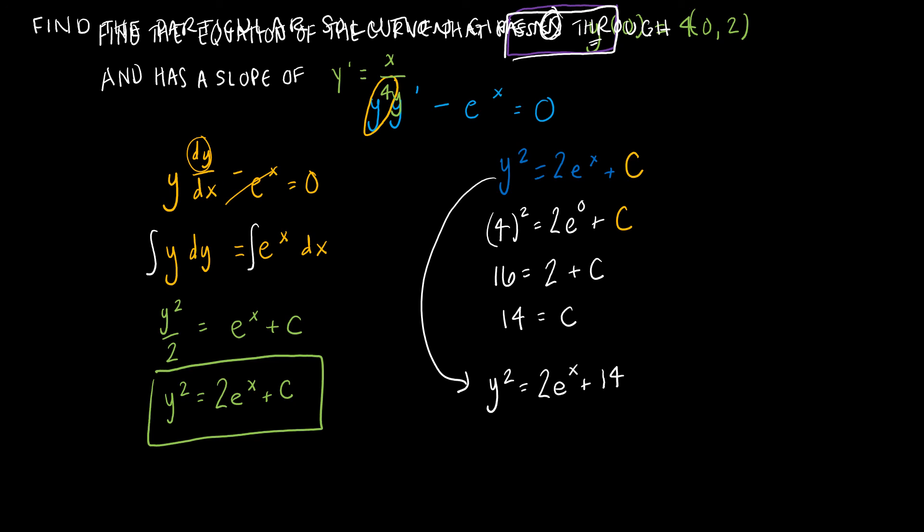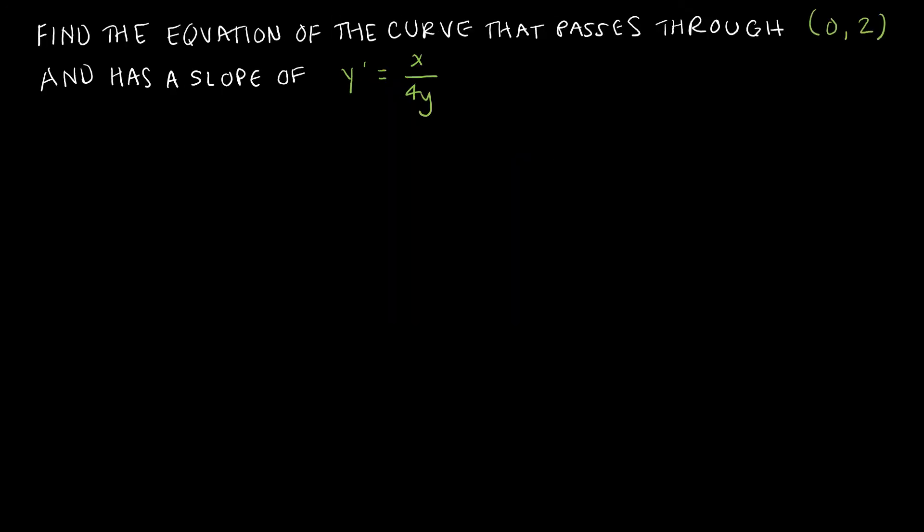If you wanted to move things around, you could, but there is no standard way to write that final solution. Just one more example before we look at a new application of differential equations. This one asks us to find the equation of the curve that passes through the point (0, 2) and has a slope of y prime equals x over 4y. This might seem like a different kind of question, but this is really a find-the-particular-solution type of question, just worded a little bit differently.